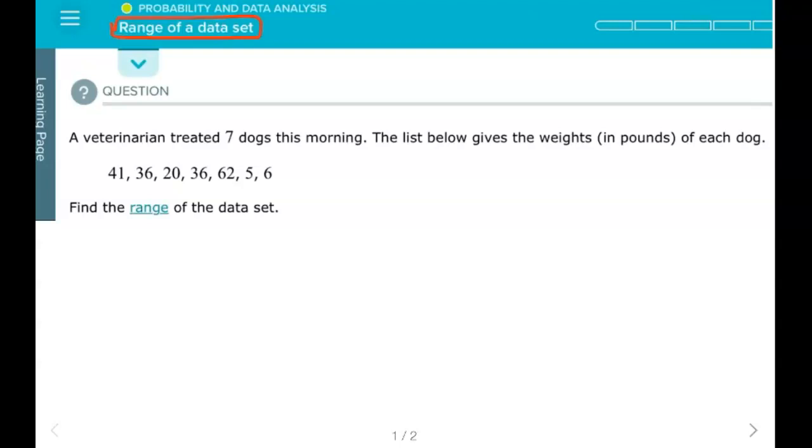All right mathematicians, here we're finding the range of a data set. Range is the highest number minus the smallest number, biggest number minus the smallest. It's really easy to pick out those values. The biggest number here is 62, the smallest number is 5, so I just need to do 62 minus 5.